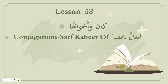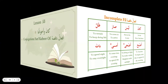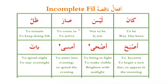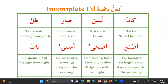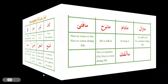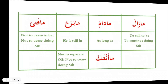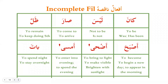Kana is an incomplete fail. That's why it has a different grammatical rule, and other incomplete af'alun that have the same grammatical implication are grouped together. There are 13 fa'alun naqisa grouped together.